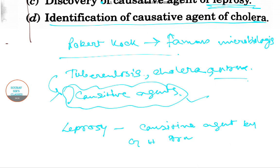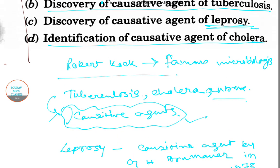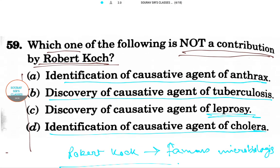The causative agent was discovered by G.H. Armauer Hansen in 1873. The bacteria's identification as a causative agent in humans was not discovered by Robert Koch, so the answer is option C: discovery of causative agent of leprosy.